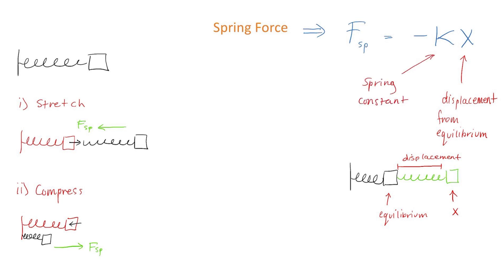Then we have the spring constant k. This has units of newtons per meter, and it represents the stiffness of the spring. So a very large spring constant means you have a very stiff spring that's hard to compress and stretch.